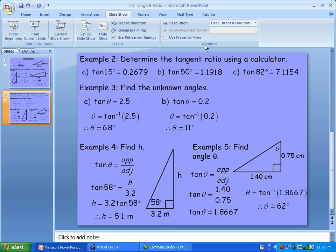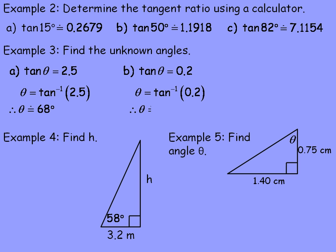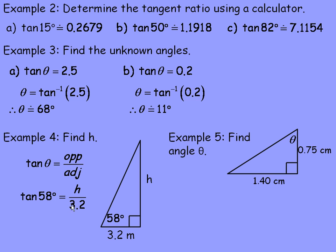In example 4, we're asked to find H, the height side of a triangle. With the 58-degree angle, the side directly across from it is H — the opposite side — and the 3.2 meters is the adjacent side beside the 58-degree angle. Setting up: tan 58 equals H over 3.2. Cross-multiplying, H equals 3.2 times tan 58, which evaluates to about 5.1 meters.